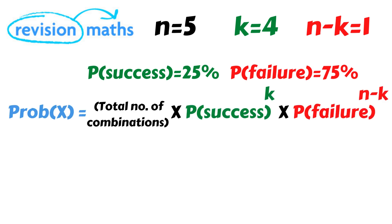The formula for binomial distribution is now on the screen. It shows the probability of an event X is equal to the total number of combinations, multiplied by the probability of success raised to the power K — representing the total number of successes — multiplied by the probability of failure raised to the power n minus K, representing the total number of failures.